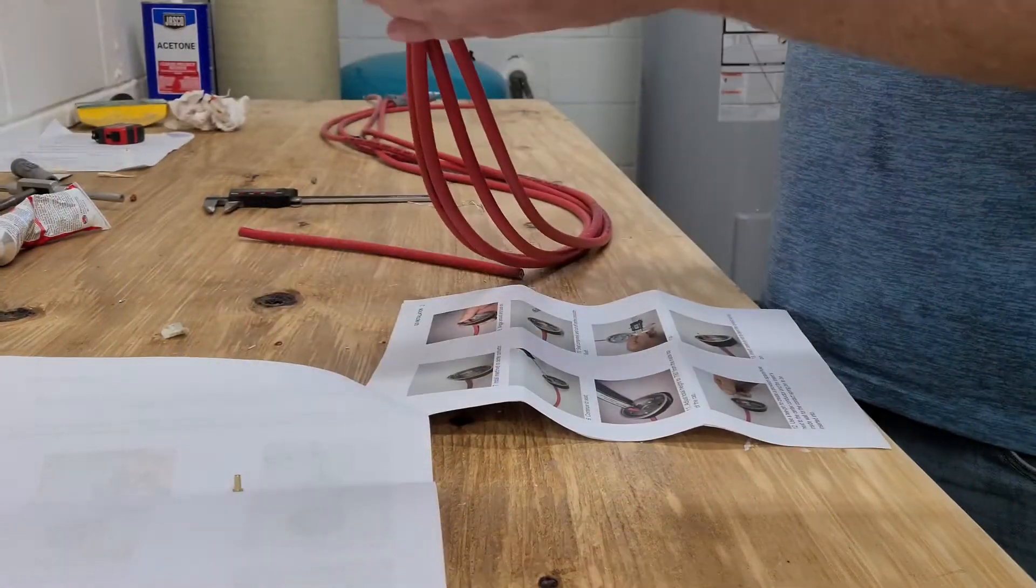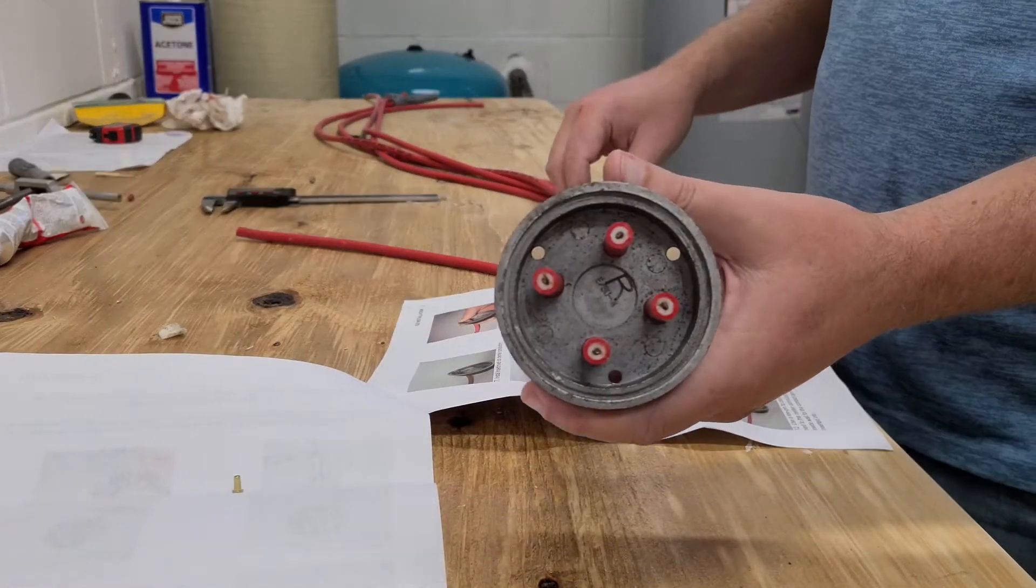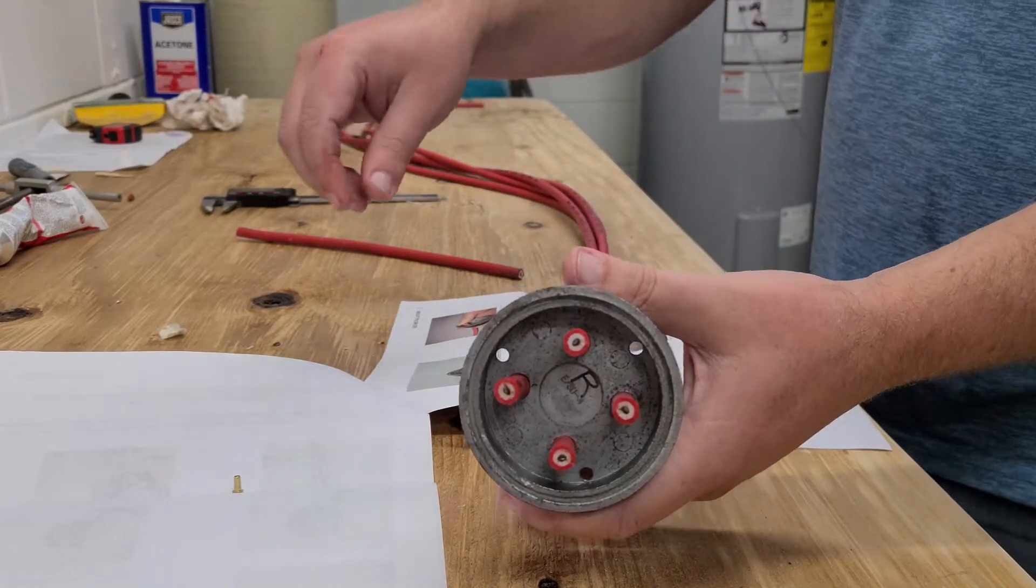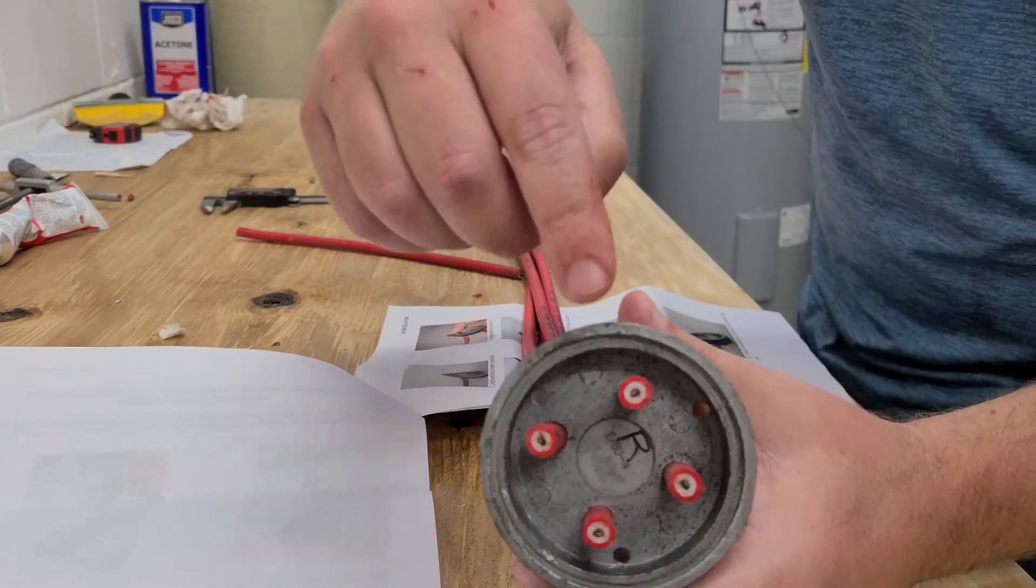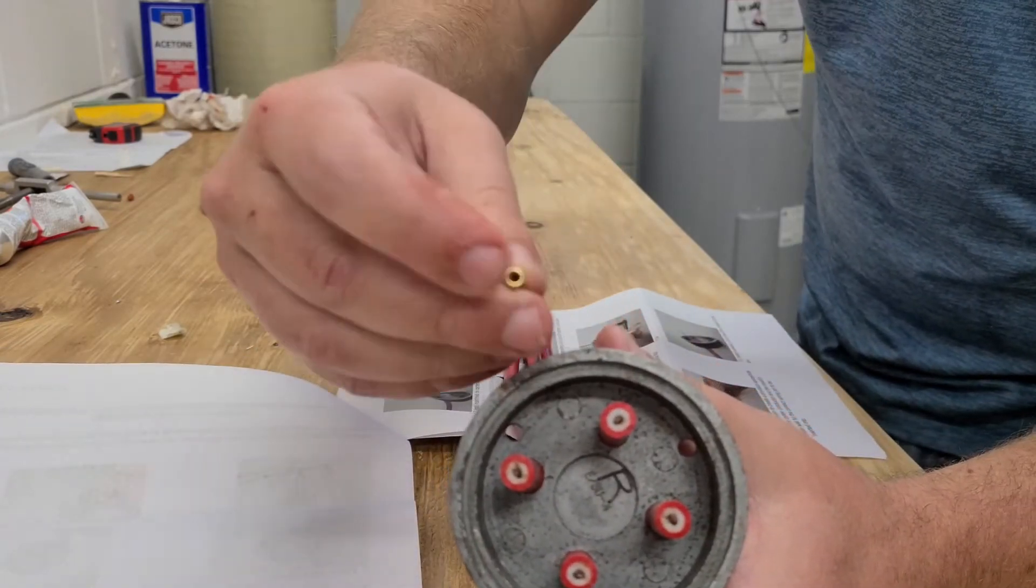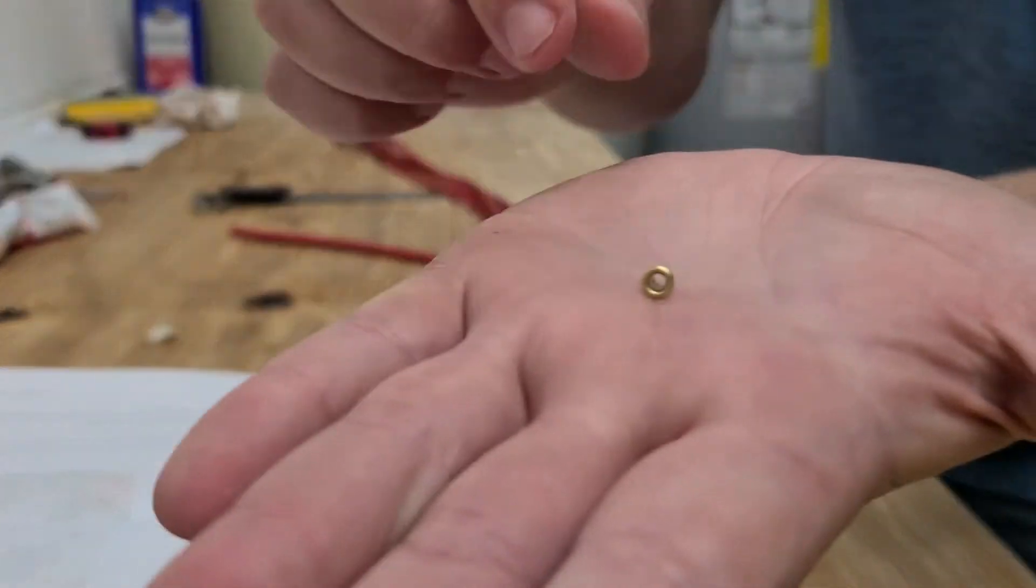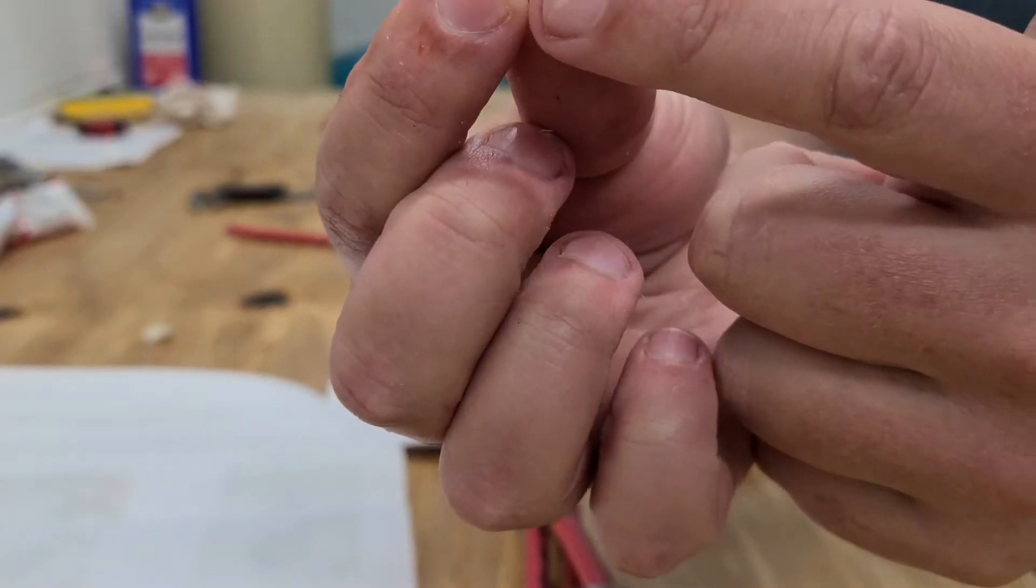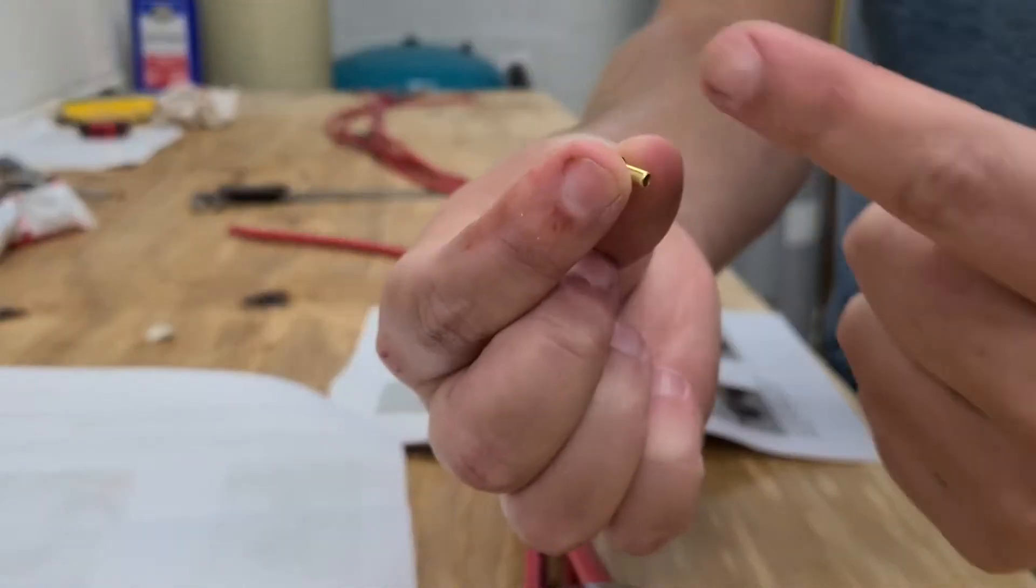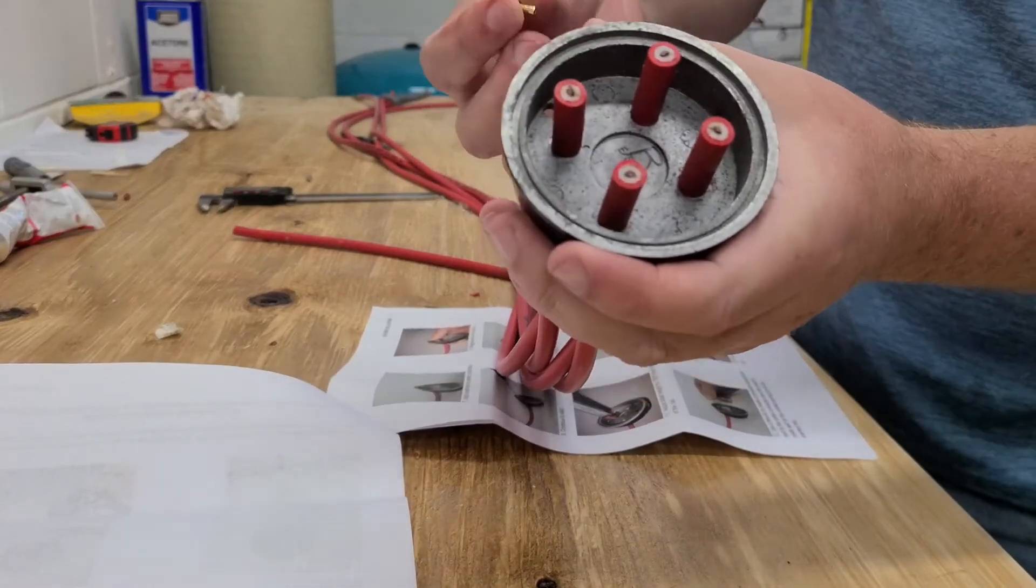All right, so we got the wires screwed in. The next step is going to be to install, insert rivet on center conductor. I don't know if you can see this center conductor here - that black piece. There's a small little rivet that needs to go on. It's got a hole going through there so that center conductor could slide right in. So we'll do that, all four of these.